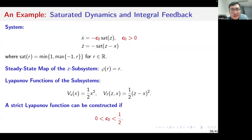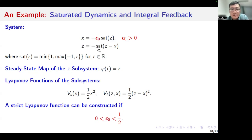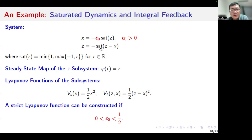Here is a very quick example. We can see that this system is in the standard singular perturbation form. The system dynamics are saturated. The Z subsystem is basically the fast dynamics, and the X subsystem is basically the slow dynamics. This is an integral feedback control system. We can find a steady state map of the Z subsystem, which is basically the identity function. We can construct quadratic Lyapunov functions for the subsystems and find a condition on C0 that guarantees global asymptotic stability of the closed-loop system. We can also construct a strict Lyapunov function based on the Lyapunov functions of the subsystems.